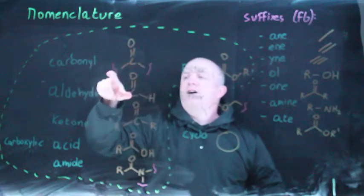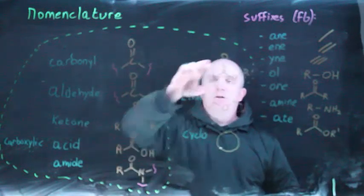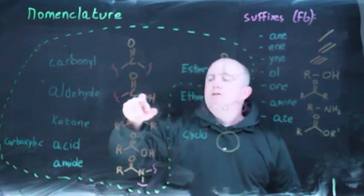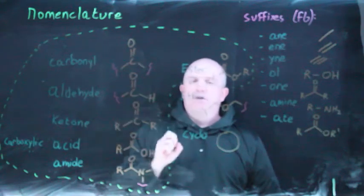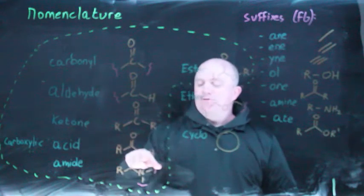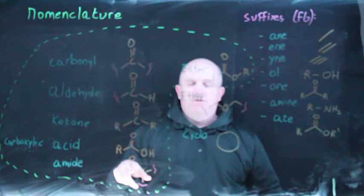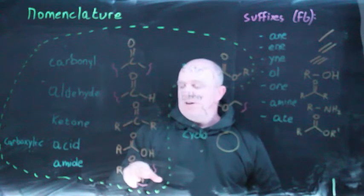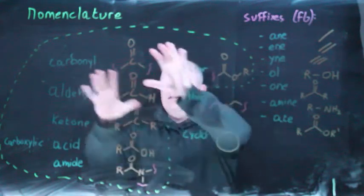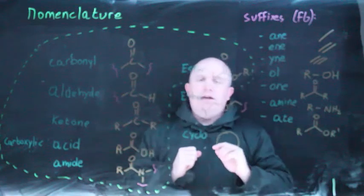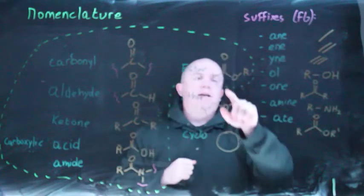The general category of carbonyls refers to a carbon double bonded to an oxygen — all of these functional groups fall under that umbrella. However, if you specifically have a hydrogen bound to the carbonyl carbon, that's an aldehyde. A ketone specifically needs two carbons bound to the carbonyl carbon. A carboxylic acid has a hydroxyl group bound to the carbonyl carbon.